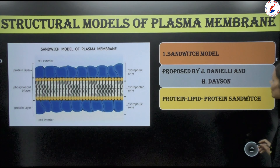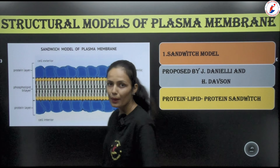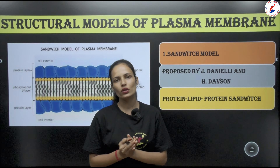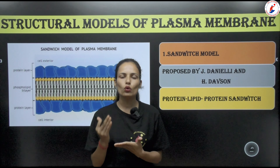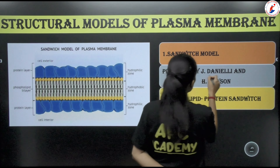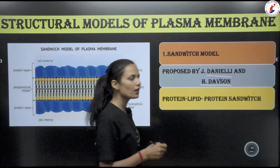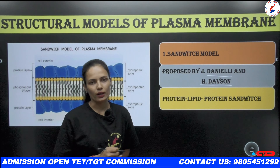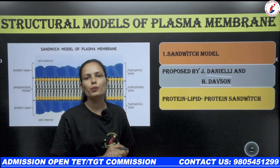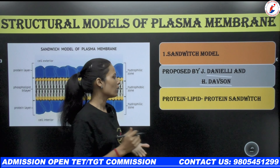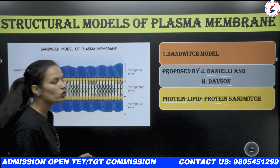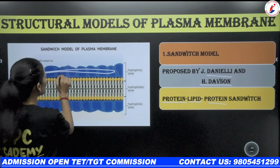Now let's talk about structural models of the plasma membrane. The most widely accepted model is the fluid mosaic model, but we will first discuss two earlier models. The first is the sandwich model, proposed by Danielli and Davson. Like a sandwich with layers on top and stuffing in the middle, the plasma membrane is also arranged with proteins on the outside and lipids in between.